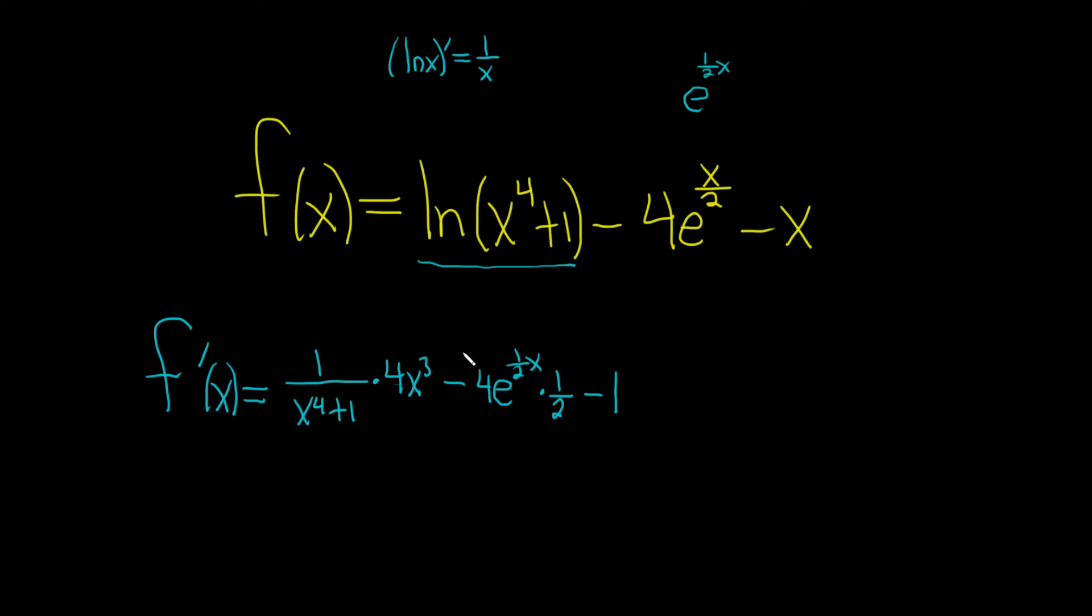Let's just recap that before we simplify. So first we took the derivative of this. The derivative of ln x is 1 over x. Here's the ln of x to the 4th plus 1. So we have to use the chain rule. So it's 1 over whatever's there. And then times the derivative of the inside, which by the power rule, you bring down the 4, subtract 1, you get 4 x cubed. The derivative of 1 is 0, so I didn't write it.